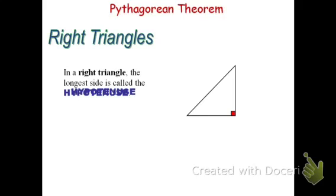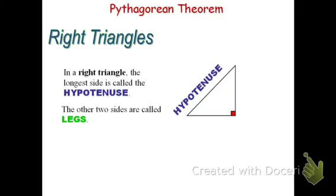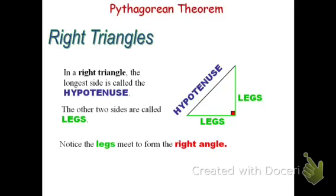This would be the hypotenuse for this triangle. The hypotenuse is always found away from the right angle. The other two sides we'll call the legs. The legs are always adjacent to the right angle. In fact, the two legs will always form the right angle — where they meet has to be the right angle.